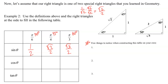Notice that sine theta increases from left to right: the numerator goes one, square root of two, square root of three — and it's always divided by two. So sine is an increasing function going from left to right: one half, square root of two over two, and square root of three over two.